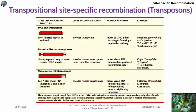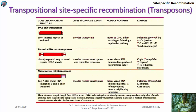Examples of DNA-only transposons include the P element in Drosophila, Tn3 in E. coli, TAM3 in Snapdragon, and AcDs in Maize. Retroviral-like retroposons include Copia in Drosophila, Ty1 in yeast, THE1 in human, and Ds1 in Maize. Non-retroviral retroposons include the F element in Drosophila, L1 element in human, and Syn4 in Maize. These transpositional site-specific recombinations are occurring across Drosophila, Maize, E. coli, Snapdragon, and human.